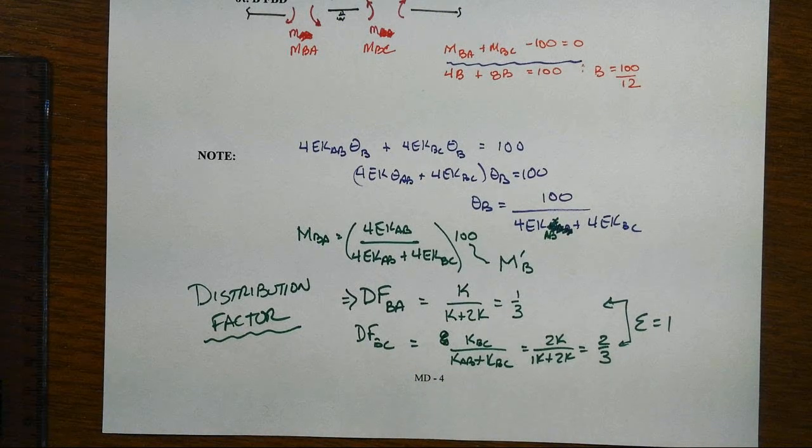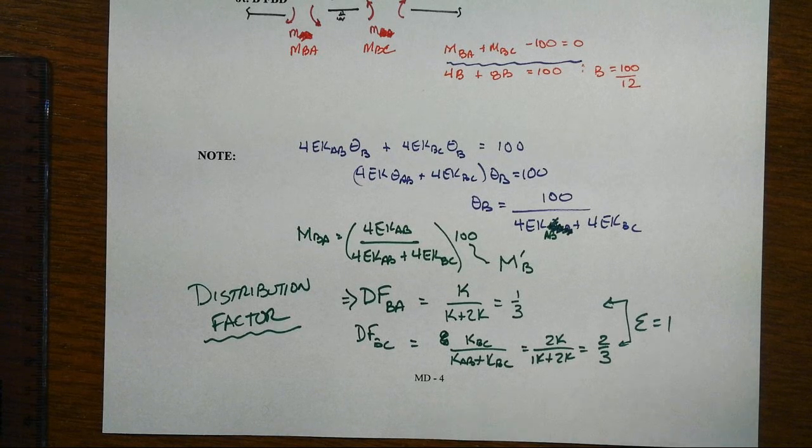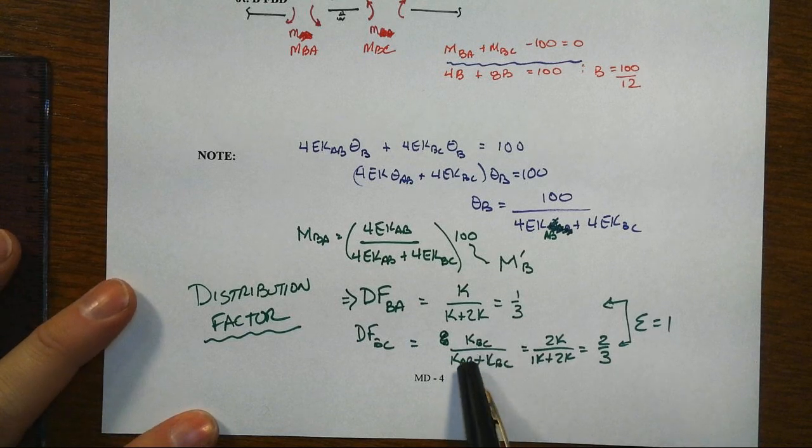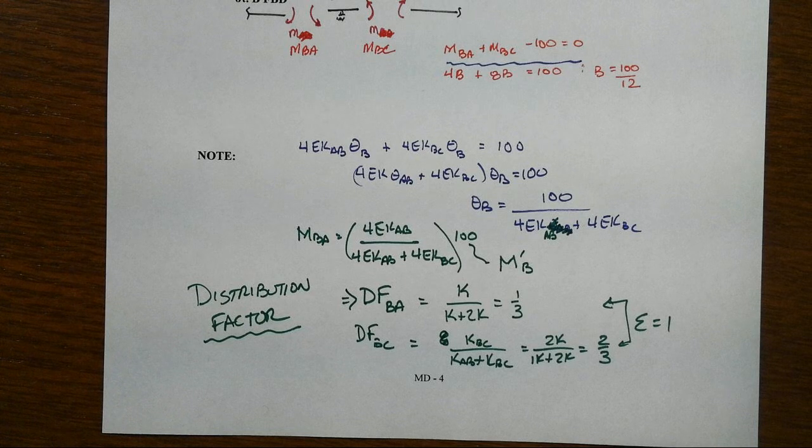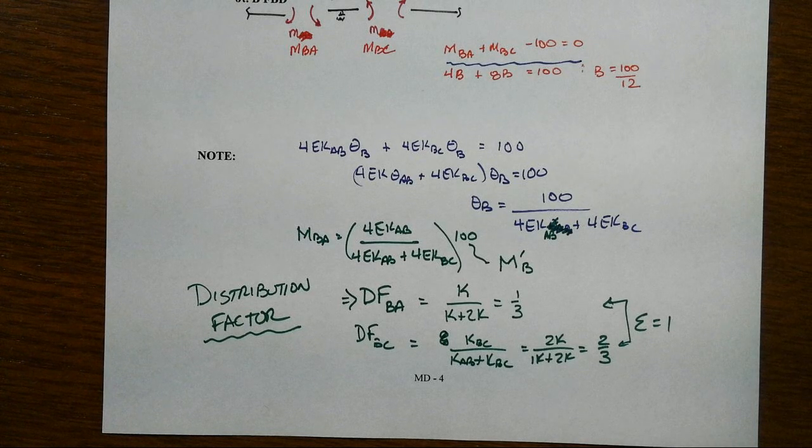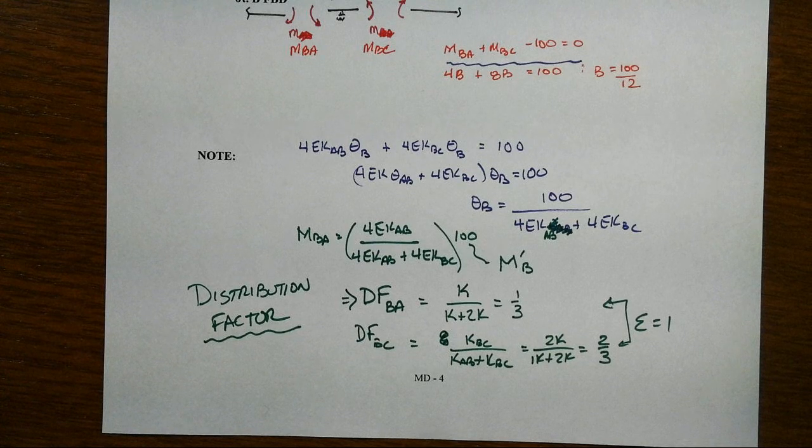Let's say it again. The distribution factor tells us that any sort of unbalance gets distributed to the various members according to relative stiffness that come into only the members connected at that particular joint. In the next example, we're going to apply this numerically.